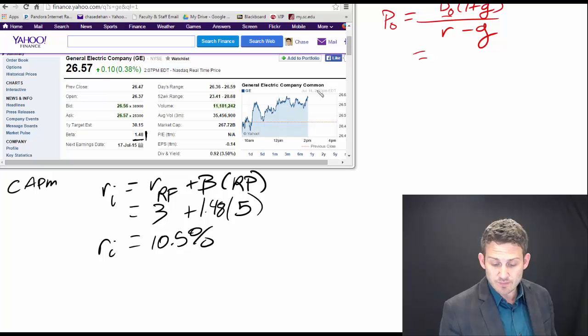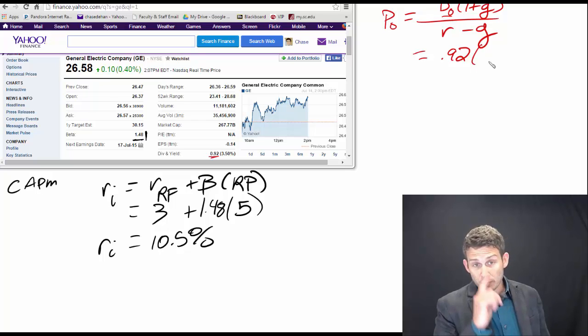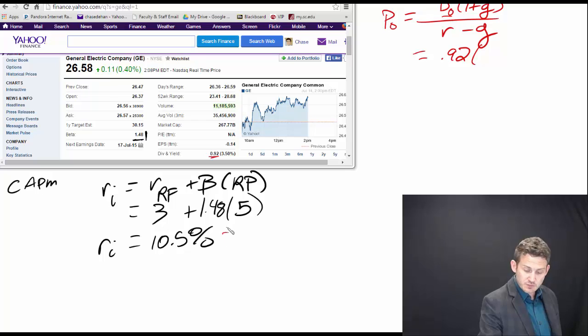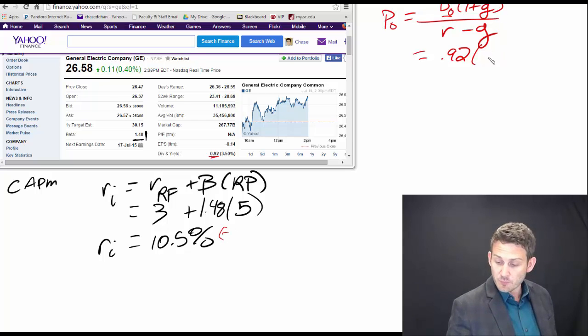So off of our table, we are given D zero, which is giving us our dividend yield here at 92 cents. And then we're gonna use a growth rate here. And just backing this out using this information right here, this is showing us we have a growth rate of 6.3%. So this is gonna be 1.063.